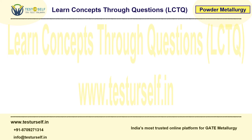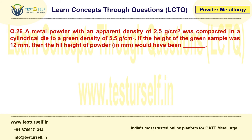Now we are going to take another example. A metal powder with an apparent density of 2.5 g/cc was compacted in a cylindrical die to a green density of 5.5 g/cc. If the height of the green sample was 12 mm, what would the fill height of powder in mm have been? You already know the different types of densities and the equations. So pause this video now and try to figure it out by yourself.